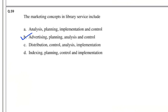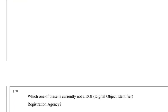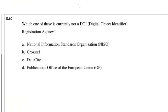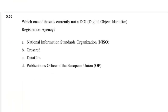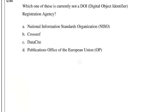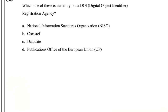Question number 60: Which one of these is currently not a DOI (Digital Object Identifier) Registration Agency? The answer is National Information Standards Organization (NISO).